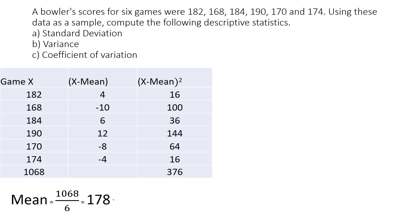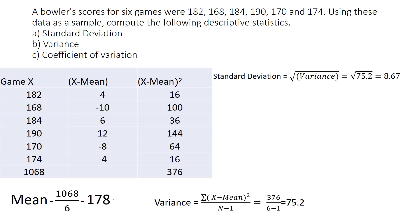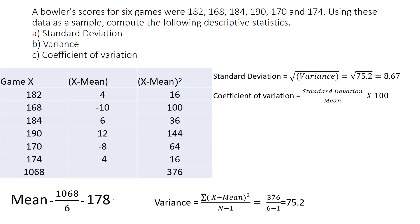We calculate x minus mean for each value: 182−178=4, 168−178=−10, 184−178=6, 190−178=12, 170−178=−8, 174−178=−4. Squaring each: 16, 100, 36, 144, 64, 16, giving a sum of 376. Variance is 376 divided by (6−1), which equals 75.2. Standard deviation is the square root of 75.2, which is 8.67.